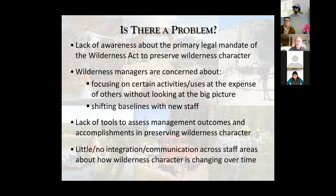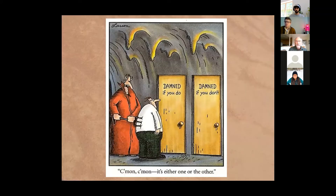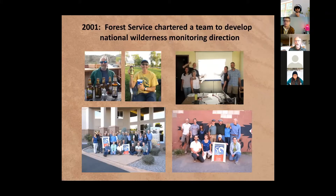A third problem: there were absolutely zero tools for managers to understand the outcomes of their stewardship in preserving wilderness character. And across all agencies, we kept seeing a tremendous lack of communication among staff. Each program area was siloed — cultural resources, fire, engineering — each would just go into the wilderness and do their thing without considering the broader implications for wilderness character.